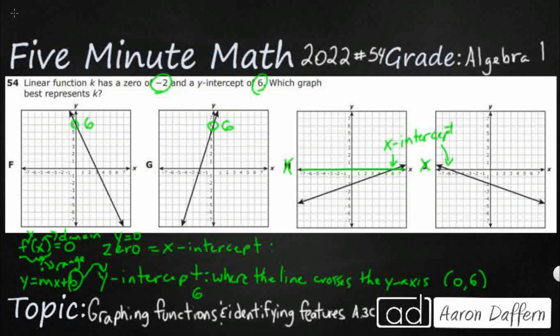So if your zero is your x-intercept because y equals 0, it's on that x-axis line, then we know what that means. Then that's where the line crosses, not the y-axis, but the x-axis because your y is going to be 0.